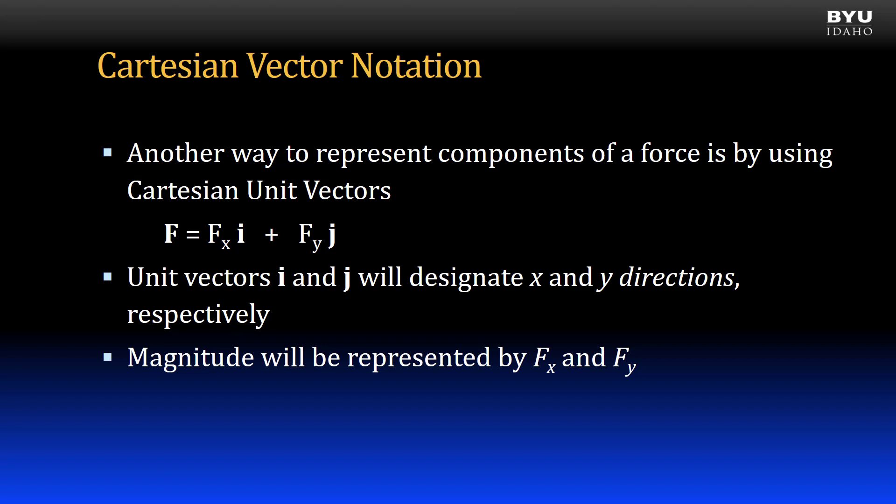The magnitudes of f sub x and f sub y can be found as just described previously. So to use Cartesian notation we will take each force vector and break it into its x and y components and put them in this notation format. The terms themselves are going to be the same values as they were with the previous method. It's just written down a little bit differently and in a little bit more compact form.